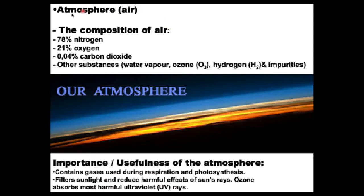The atmosphere is the air part of the Earth. It comprises air containing approximately 78% nitrogen, 21% oxygen, and 0.04% carbon dioxide. The air is also composed of other gases like water vapor, ozone, and hydrogen, as well as impurities. Impurities in the air are air pollutants caused by pollution — for example, carbon monoxide.